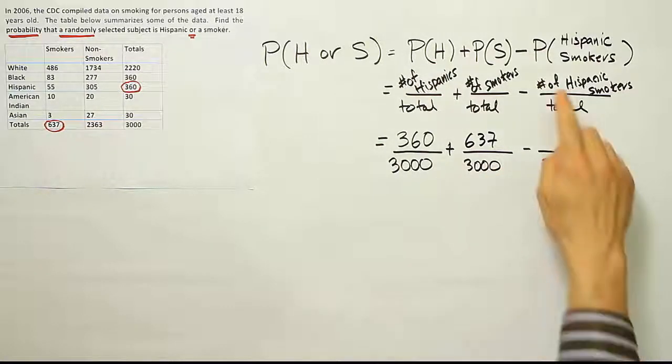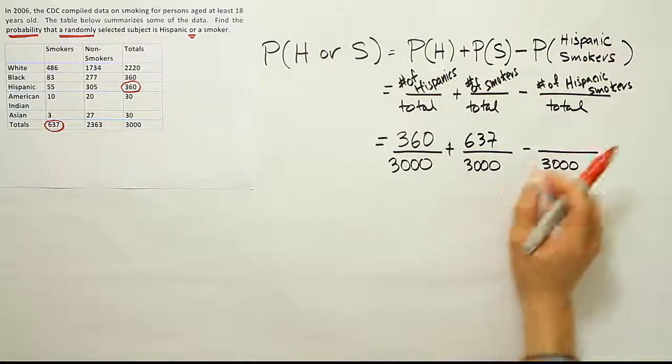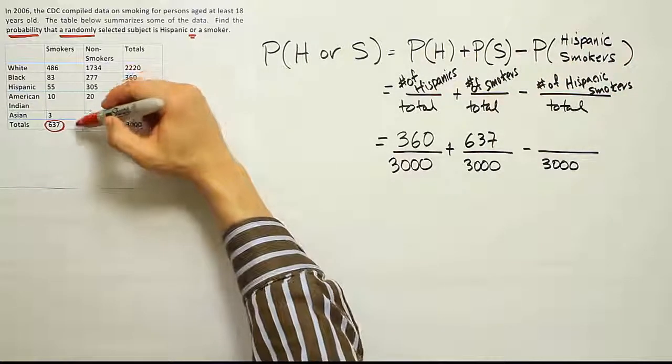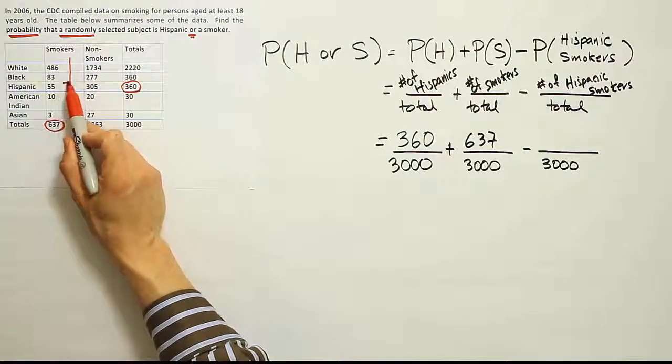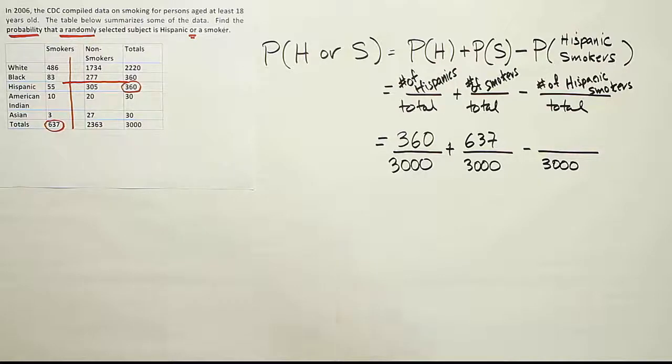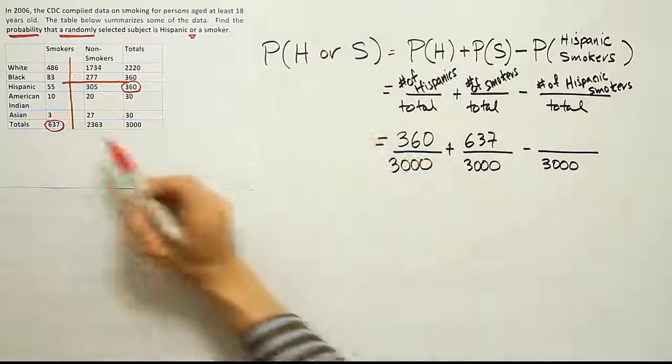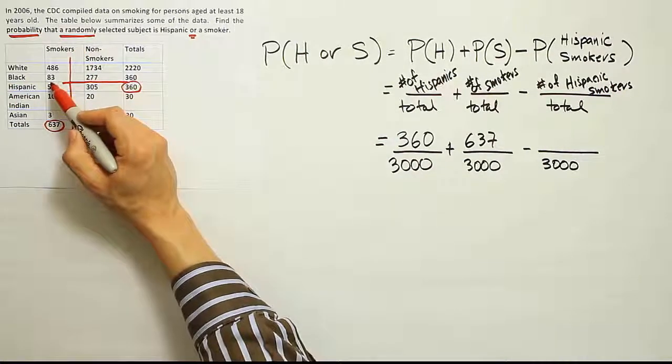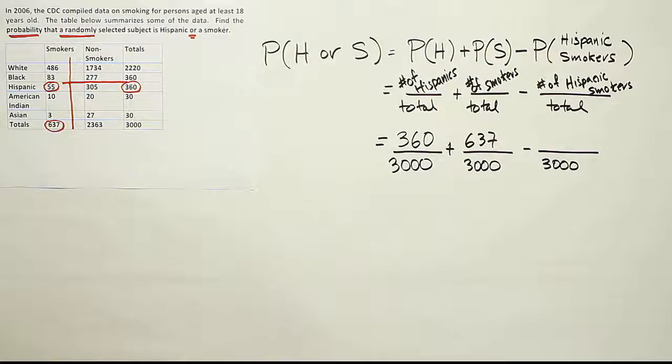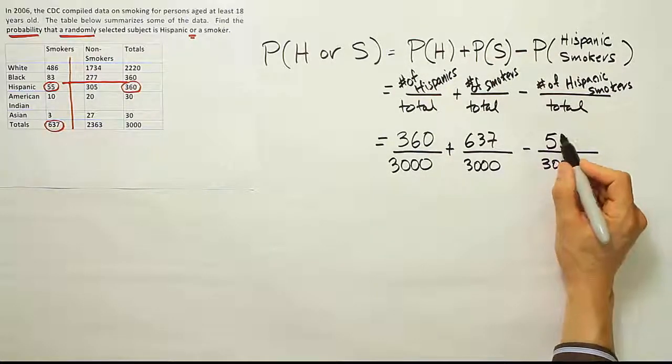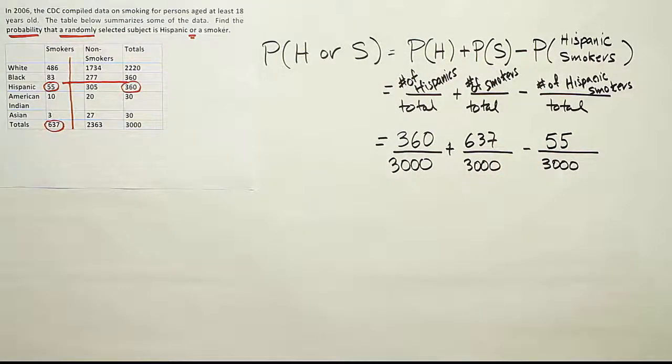And then lastly, we need the number of Hispanic smokers. Well, this is an intersection of these two categories. It's a merging of the two categories. But the idea of an intersection works nicely with a table, because if you thought of this as a road, the smoker road, and you thought of this as the Hispanic road, then there'd be some intersection point, a place with a crisscross. The cell with a crisscross is exactly the place where the Hispanic smokers reside. So the Hispanics who smoke, that number is 55. And that occurs right at the intersection of my two lines. So 55 people in the study would have been counted twice, because they would have been counted once for being Hispanic, and then again for being smokers, so we have to subtract them off so that we don't have a double counting effect there.